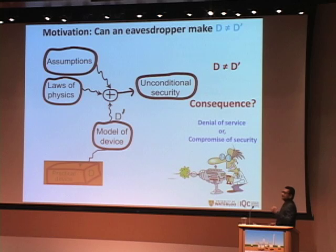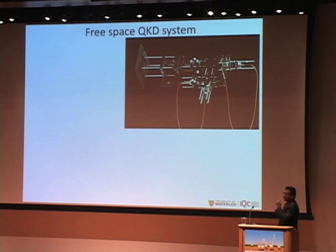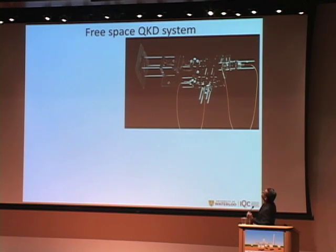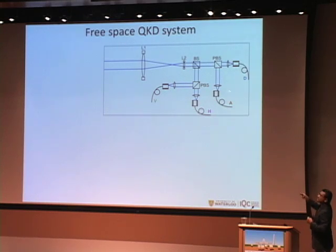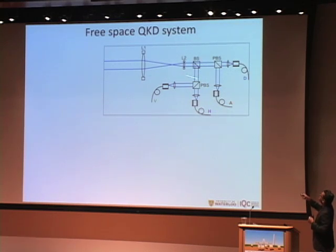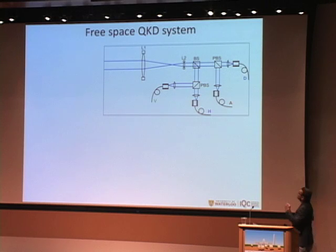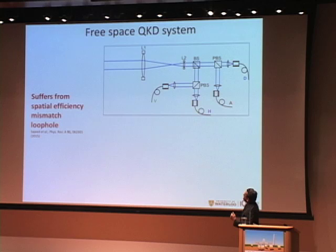We test this experimentally on two different systems. The first system is a free-space QKD system used for long-distance satellite QKD. The schematic shows a passive basis-choice scheme with a beam splitter to send photons into either the HV or DA basis, and two lenses for focusing and collimation only.